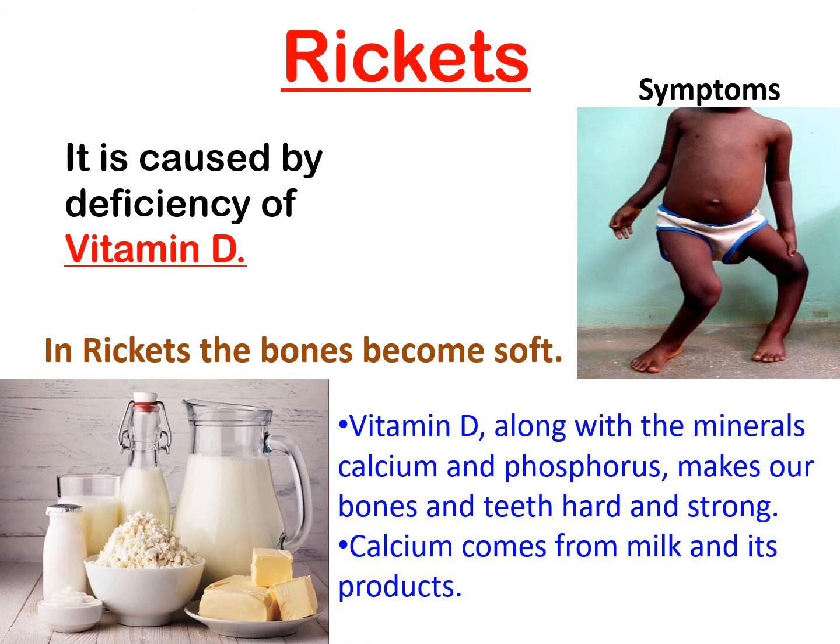Rickets is caused by the deficiency of vitamin D. In rickets, the bones become soft. Vitamin D, along with the minerals calcium and phosphorus, makes our bones and teeth hard and strong. Calcium comes from milk and its products.